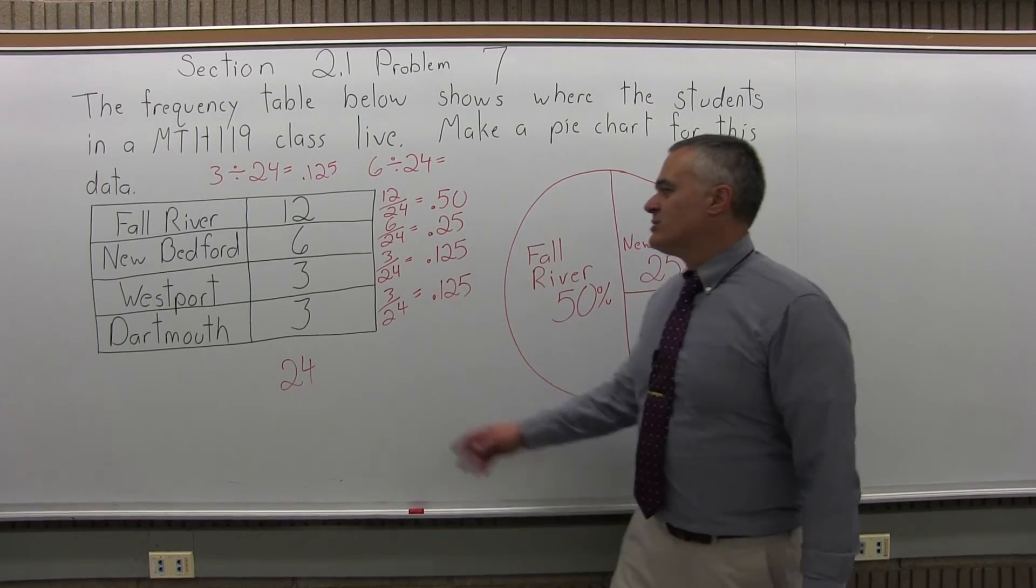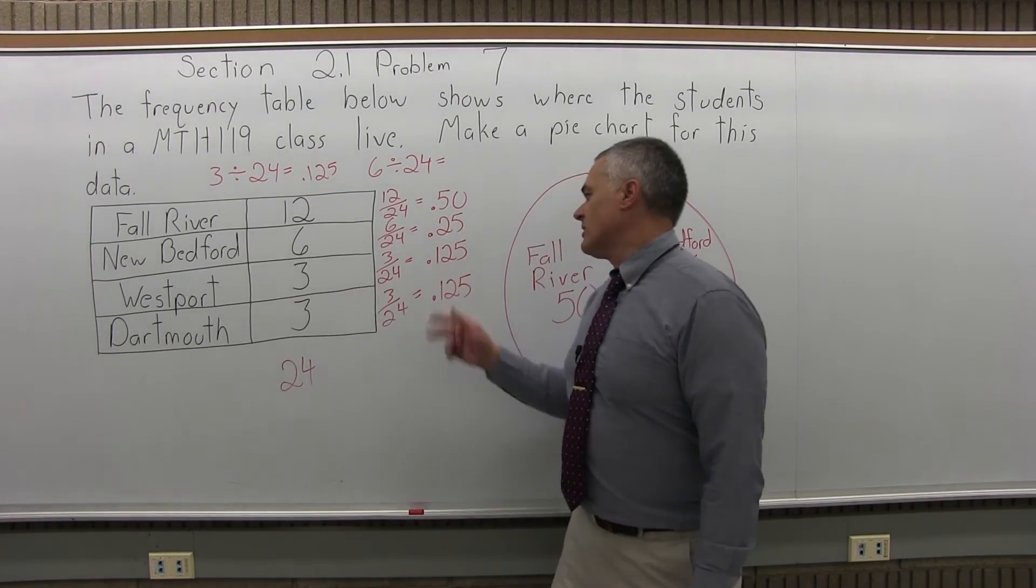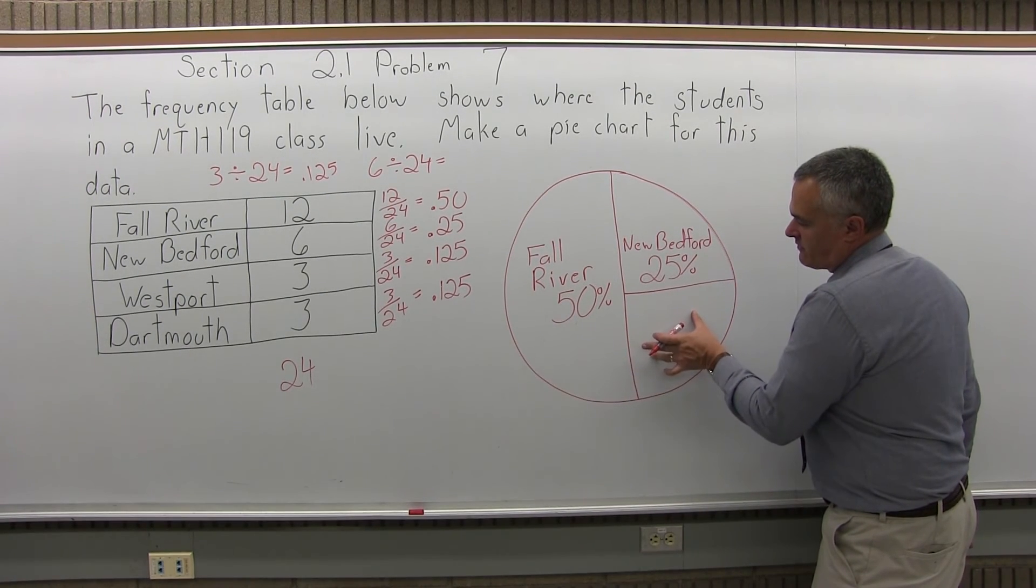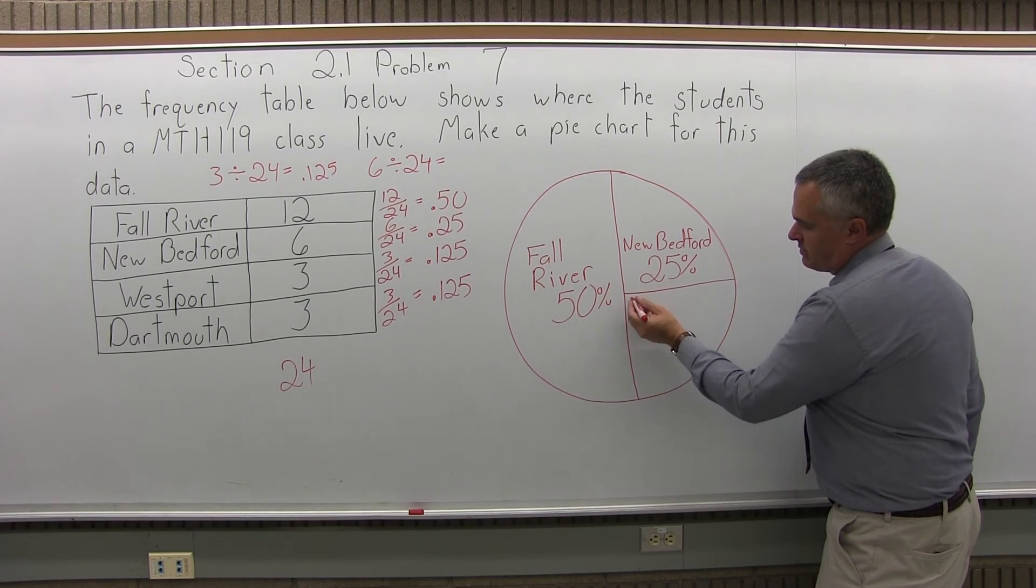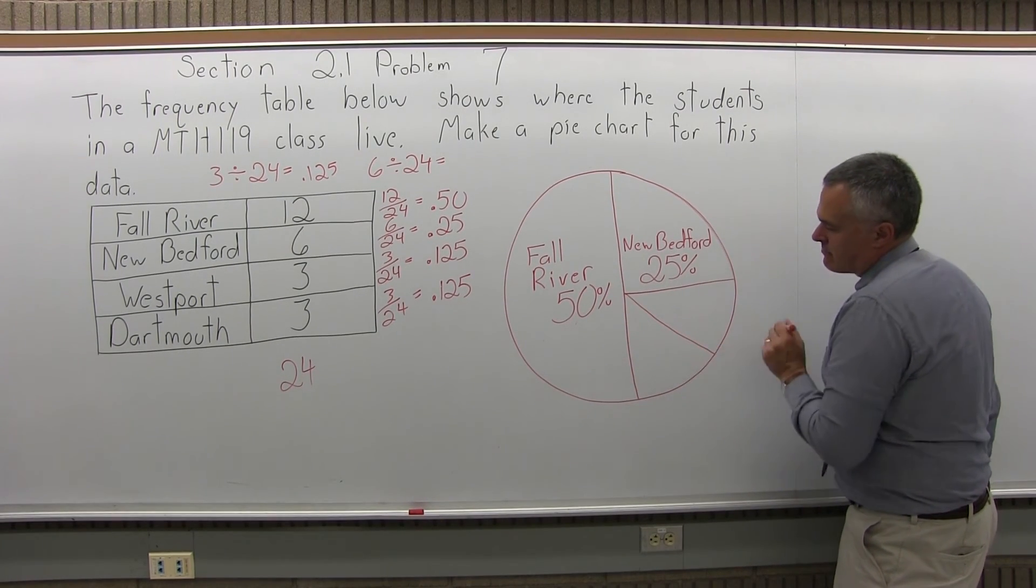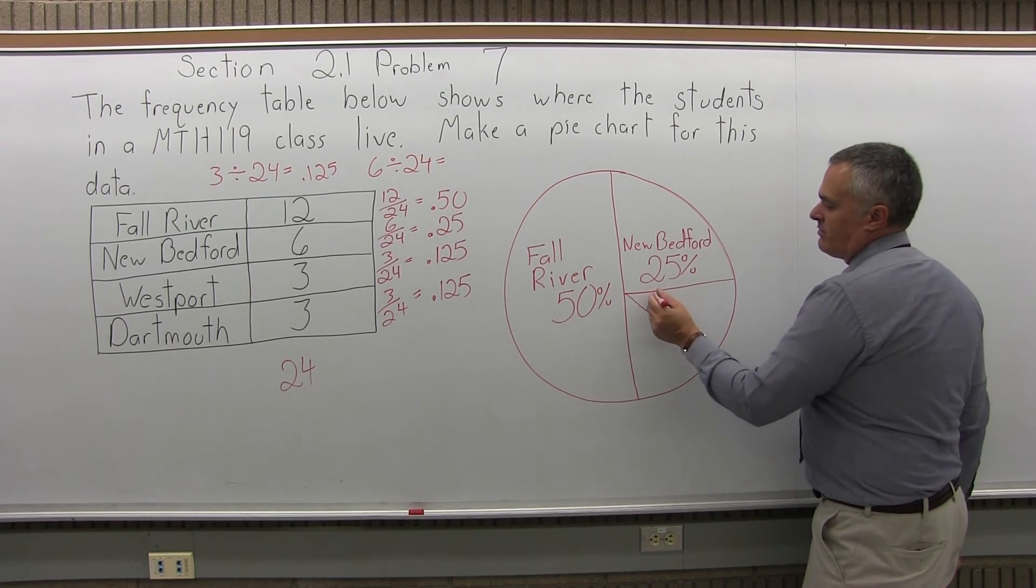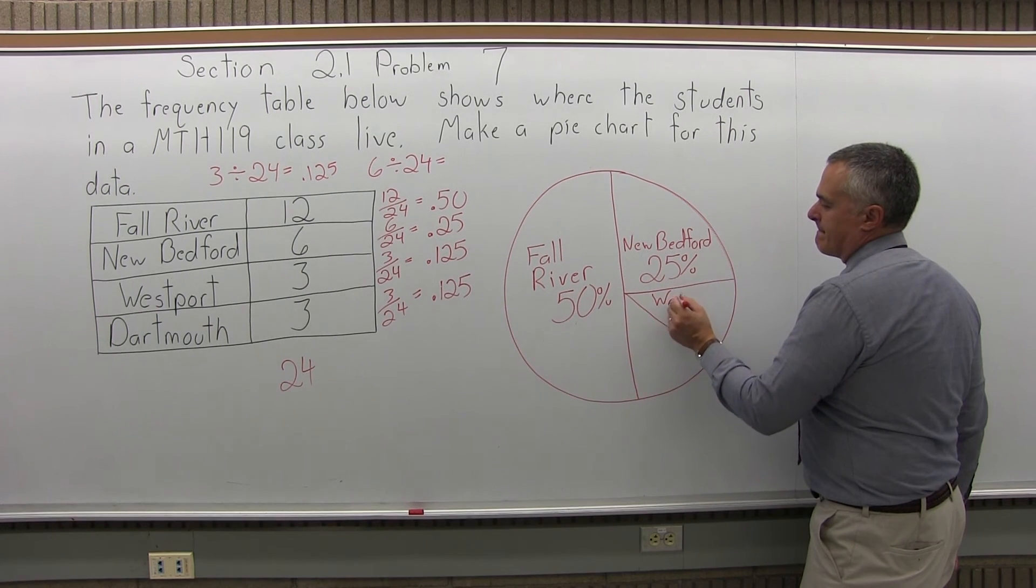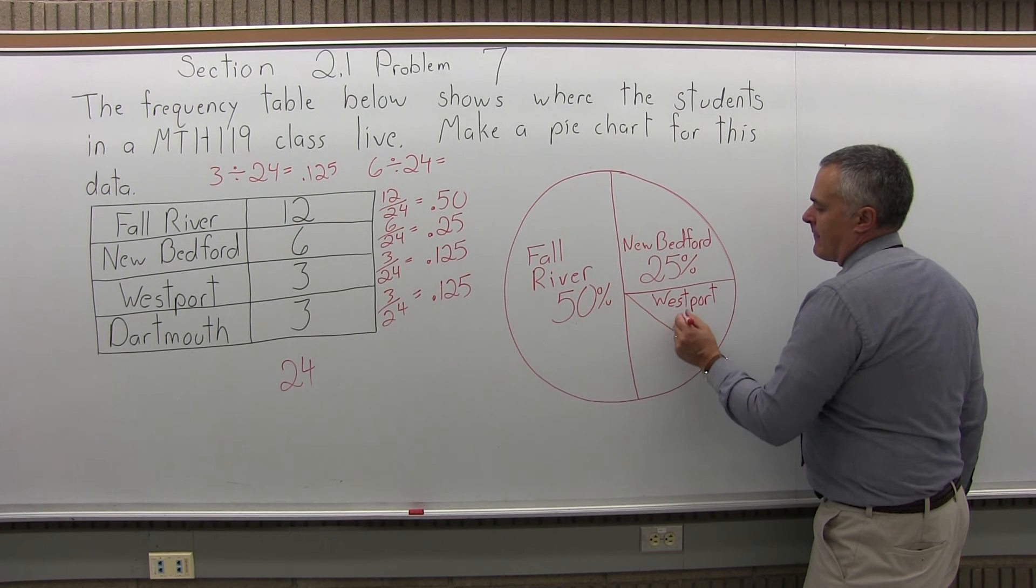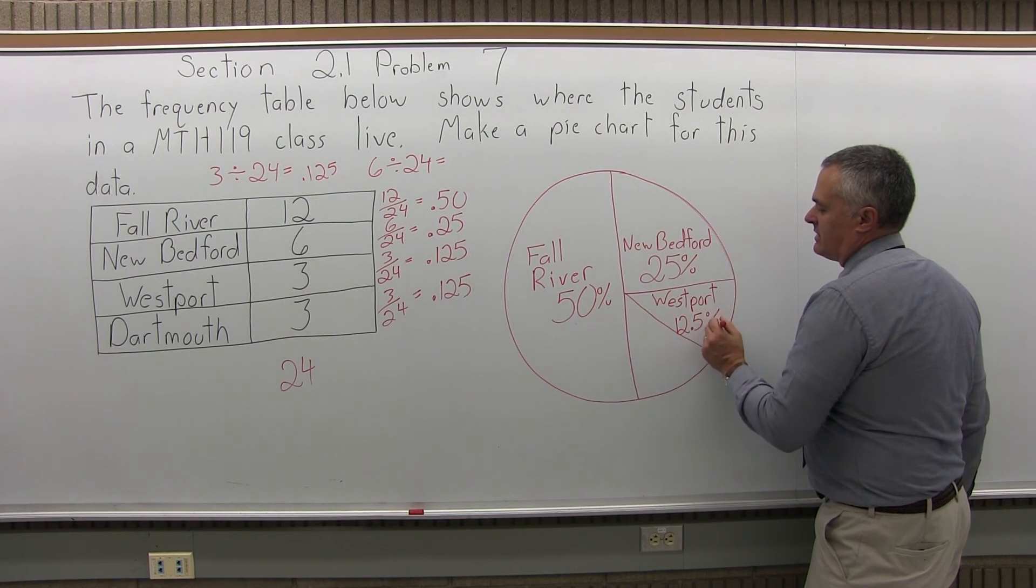And then the last two towns will split up the rest of the circle at 12.5% each. So, the remaining 25% chunk of my circle, I'm going to split it in half. It's pretty close to half. One of them being Westport at 12.5% of the class.